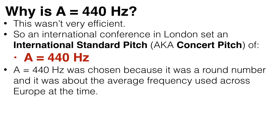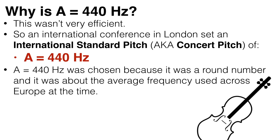So a Stradivarius violin, made during the 17th and 18th centuries, was actually designed for a much lower pitch and therefore a lower string tension. To tune a Stradivarius up to today's concert pitch requires modifying and strengthening the violin. This, in turn, affects the sound quality.